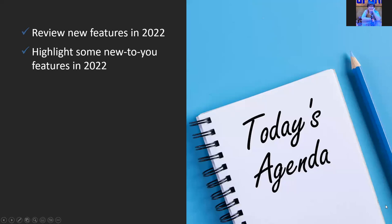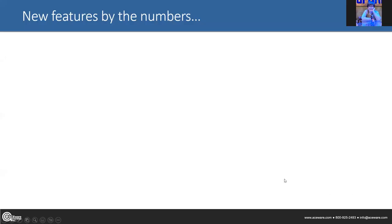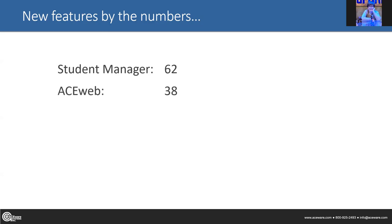What I'm going to do is mix them up a little bit — what was new, what seemed new — rather than blocking them off. So we'll review and highlight. As Sharon mentioned, over 100 new features. Student Manager had about 62 new features added this year, and Ace Web had 38.